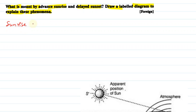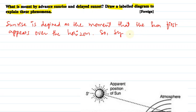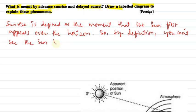Sunrise is defined as the moment that the sun first appears over the horizon. So by definition, you cannot see the sun before it appears.